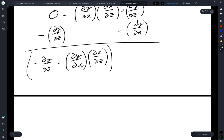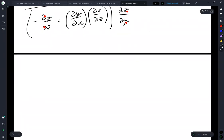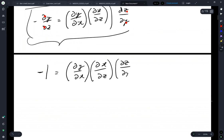And multiply both sides by dz by dy. So now on our left side, we got a dy dy dz dz, so that's going to be one. And this entire term now becomes minus one is equal to dy by dx, dx by dz, dz by dy. And this is the triple product rule that I showed during lecture.